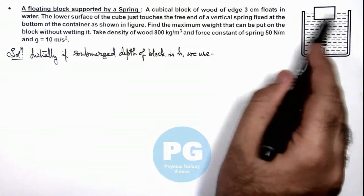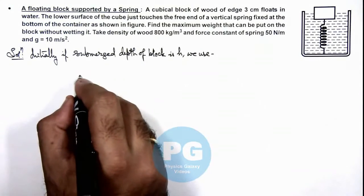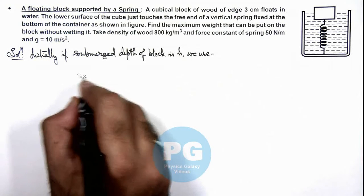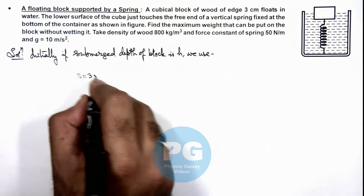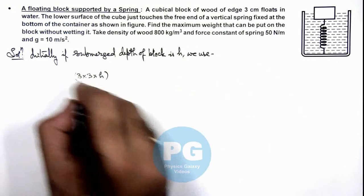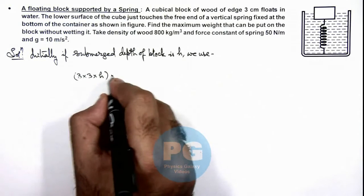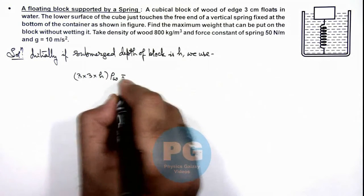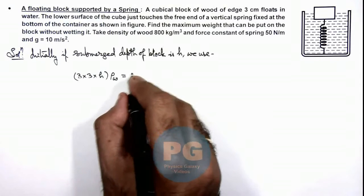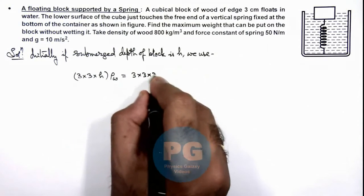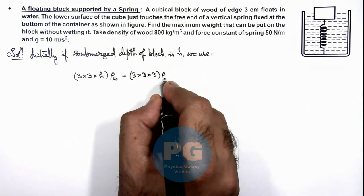We can write the volume of liquid displaced will be 3 multiplied by 3 multiplied by h multiplied by ρ of water, and that should be equal to the weight of block which is 3 by 3 by 3 multiplied by ρ of wood.